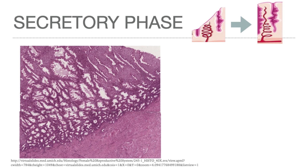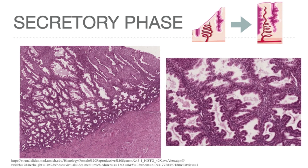The secretory phase, extending from day 15 to day 28, is characterized by the glands of the functionalis layer becoming more tortuous, acquiring lateral succulations that result in a larger lumen. The glycogen content of the cells decreases and is actively secreted into the lumen. Elongation and convolution of the coiled arteries continue and the stroma becomes edematous.